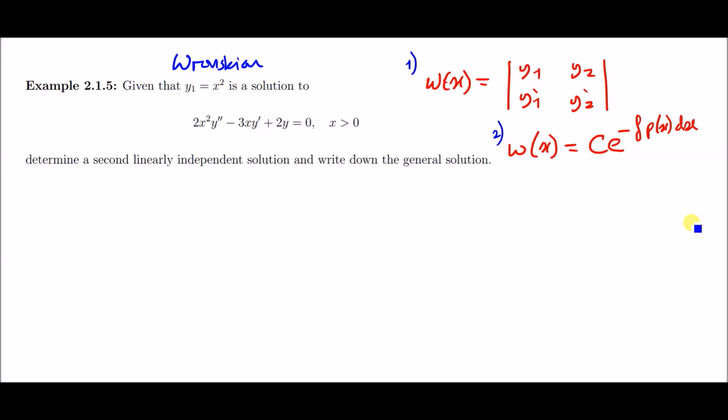What are the two definitions of a Wronskian? The first definition is simply the determinant between two of your supposed solutions. In this case, since we know y₁, we can say that according to this formula, if y₁ is here then the first derivative can be obtained here, and then y₂ and then the first derivative can be obtained as well.